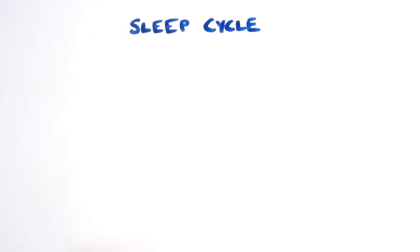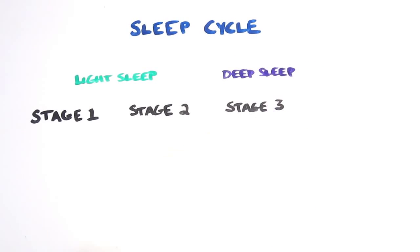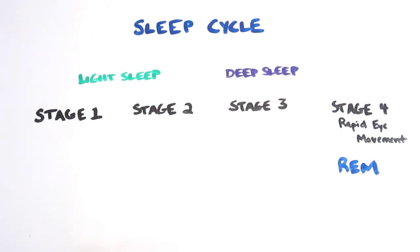There are four main stages of your sleep cycle. The first two are relatively light sleep, while the third brings you into a deep slumber. The final stage, known as rapid eye movement, or REM for short, is where most of your dreams begin.